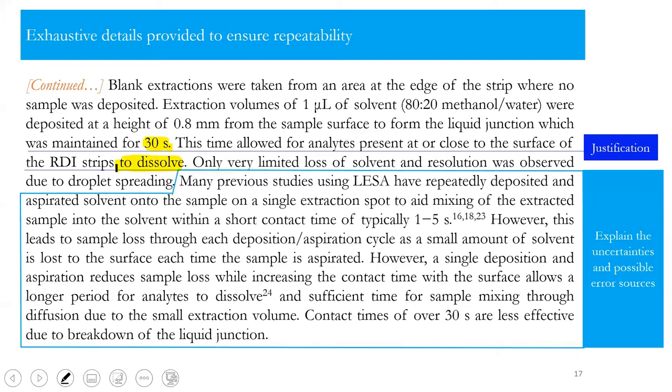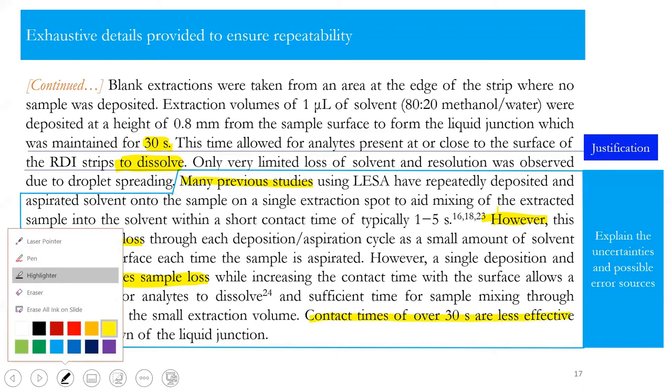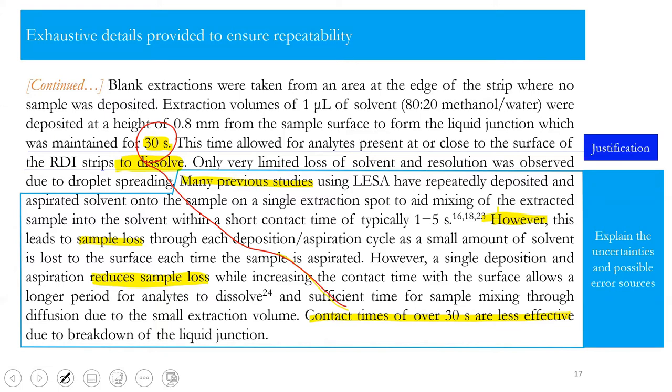The rest of this paragraph explains: many previous studies have repeatedly deposited onto something to aid mixing and extract. However, this leads to sample loss through each deposition. Previous studies have sample loss. However, a single deposition and aspiration reduce the sample loss. While this one, you can reduce the sample loss. Then you say contact time less than 30 seconds is less effective. Now you're going back to 30 seconds. You further explain why you choose 30 seconds. The time over 30 seconds is less effective. You see how much detail they provide.